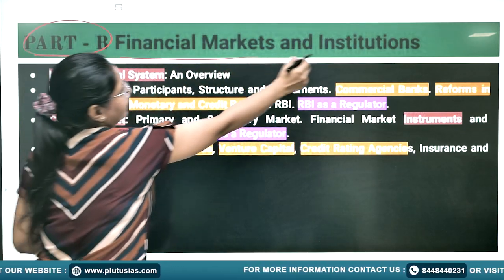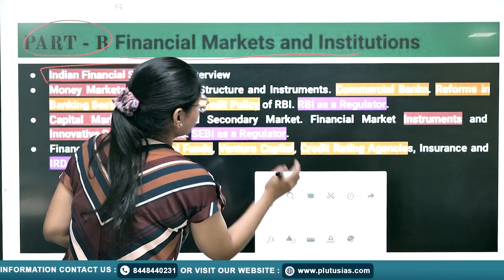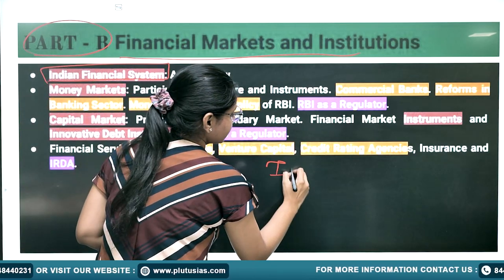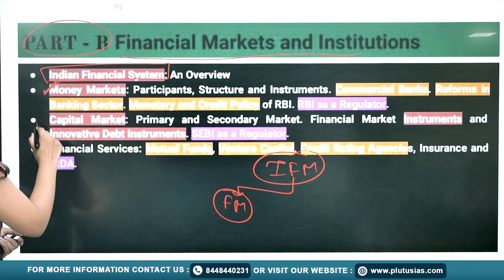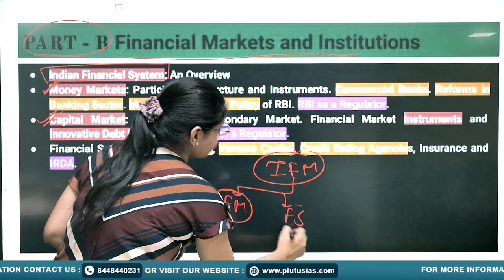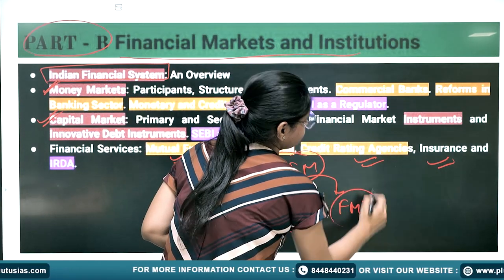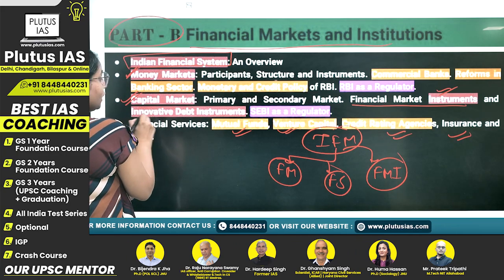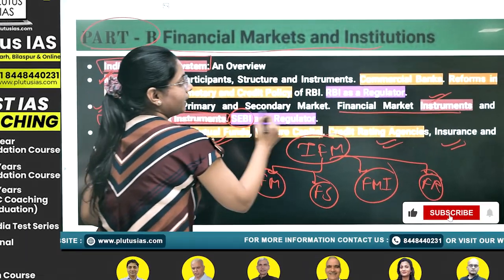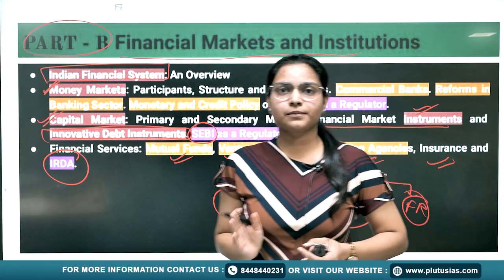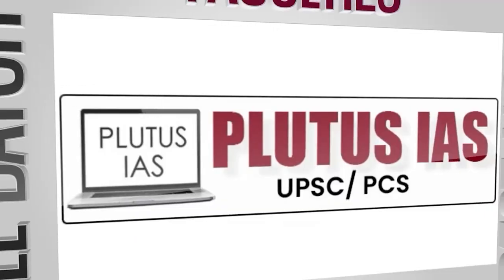The last topic is Financial Markets and Financial Institutions. Within the Indian Financial System there are Financial Markets — Capital Market and Money Market. There are Financial Services such as Mutual Funds, Venture Capital, Credit Rating Agencies, and Insurance. You also need to read Financial Market Instruments, Innovative Debt Instruments, and Financial Regulators. We have discussed all the topics of Paper One, along with the priority and strategy. Hopefully it will help you. Thank you.